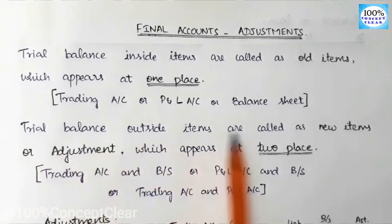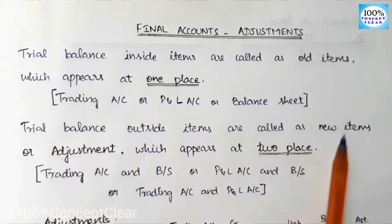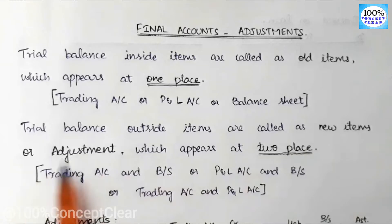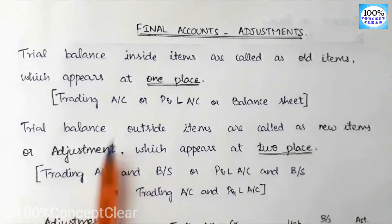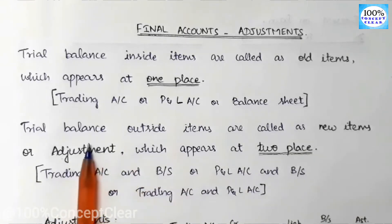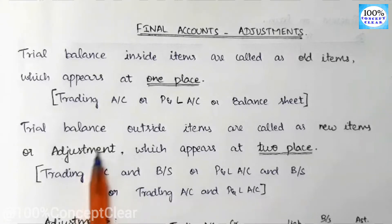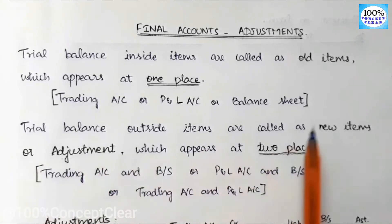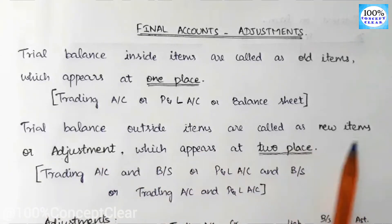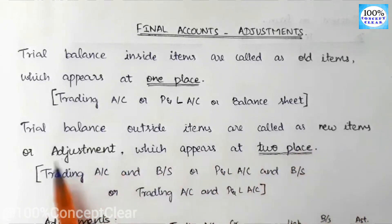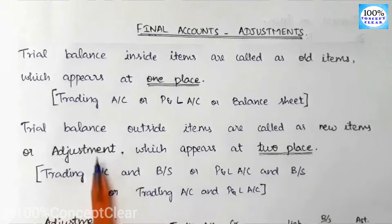Trial balance outside items are called new items or adjustments. We will get some items outside of the trial balance — these are new items. We will tell you about adjustments.